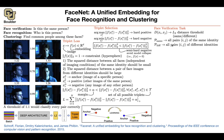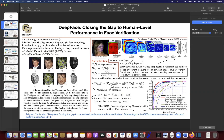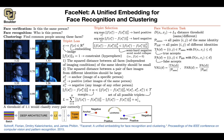You define true accepts: if the distance between two images is less than the threshold and they are indeed the same person, that is a true accept. False accepts occur when your algorithm decides two people are the same but they are not. These metrics are functions of the threshold. Plotting false positive rate versus true positive rate gives you a curve — that is how you evaluate your model.